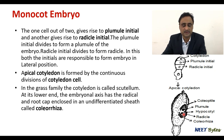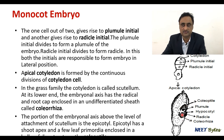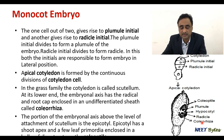At the lower end of the embryonal axis, the radicle and root cap are enclosed by an undifferentiated sheath called the coleorhiza, which encloses the radicle. The portion of the embryonal axis above the attachment of the scutellum is called the epicotyle. The epicotyle has a shoot apex and a few leaf primordia, and it is enclosed in a structure called the coleoptile. So remember: the shoot apex is enclosed by the coleoptile and the root apex is enclosed by the coleorhiza.